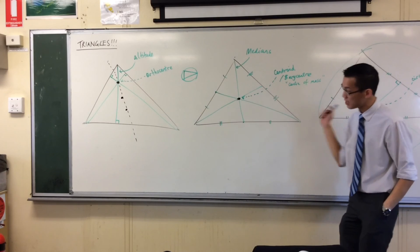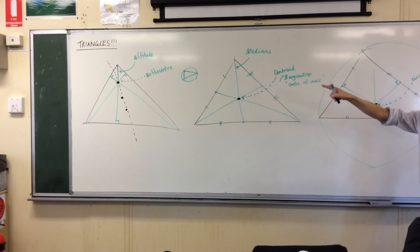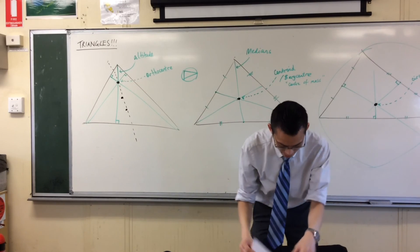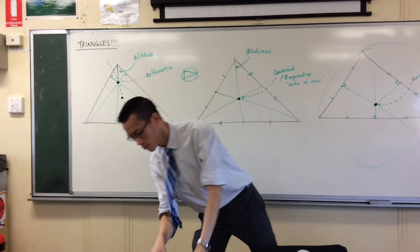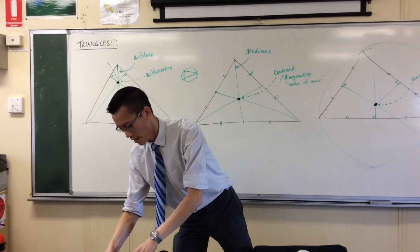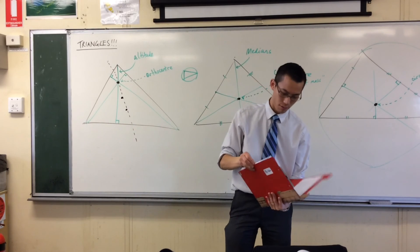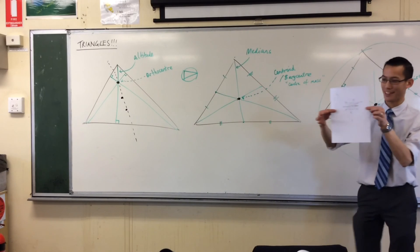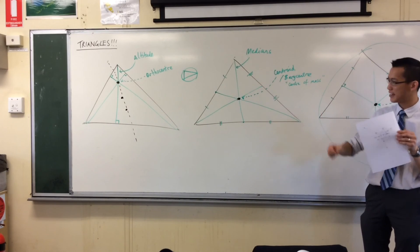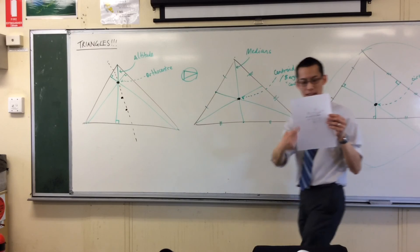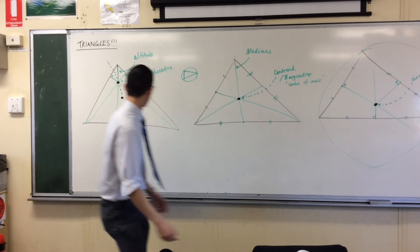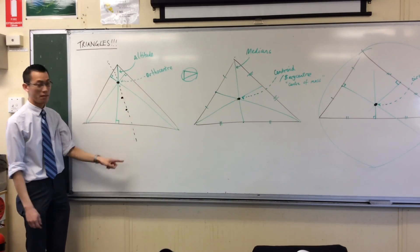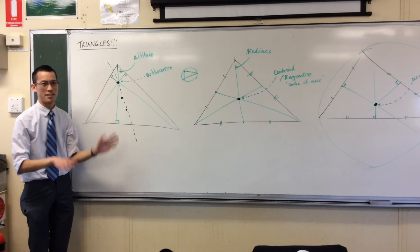And in fact, it's not just these three centers that are on the Euler line. There are other centers. Another way of finding the center of the triangle, and this center, which is called the Exeter point, it's named after a guy, also lies on this Euler line. It's pretty crazy.